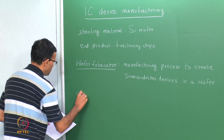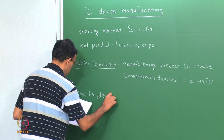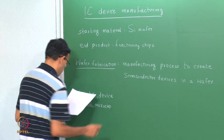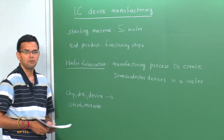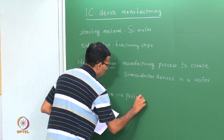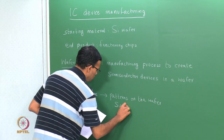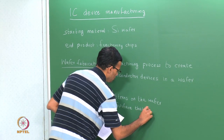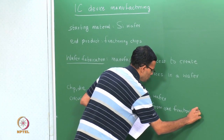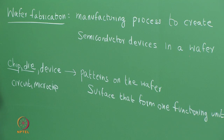The first definition is that of a chip or a die. Other common words used are device, circuit, or microchip. All of these refer to patterns on the wafer surface that form one functioning unit. The word 'die' is especially used in the context of a fab.